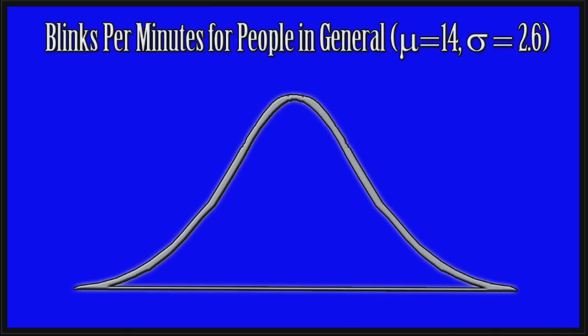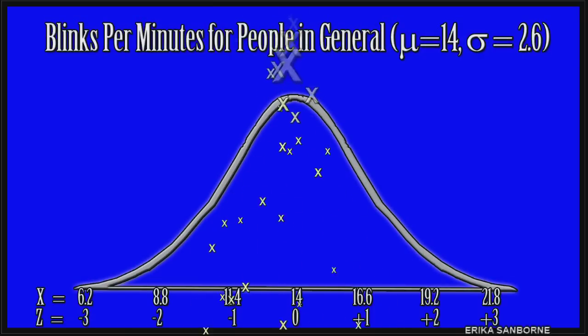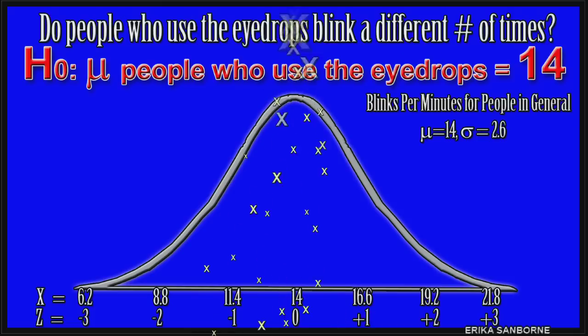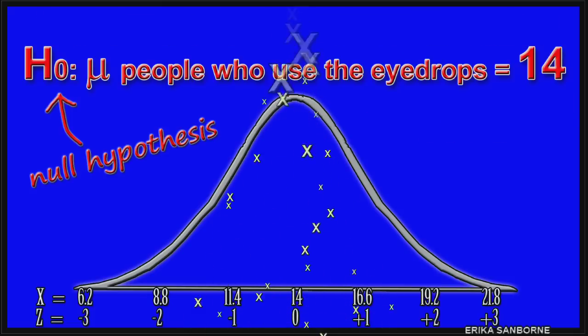First we have this nice, known population for blinks. The null hypothesis is that people who use the eyedrops blink just like in this picture. Some people are going to blink more than 14, some less than 14, but the mean for the population of people who use the eyedrops is 14. That's it. The null hypothesis is that people who use the eyedrops are just like everybody else with their blinking.